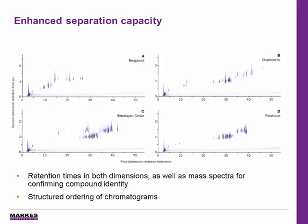The GC×GC color plots for four of the analyzed essential oils are shown here. It's useful to have retention times in both dimensions as well as mass spectra for confirming compound identity. This is even more important when investigating final fragrance mixtures or cosmetics, which can be even more complex and contain higher matrix levels that can hinder identifications.